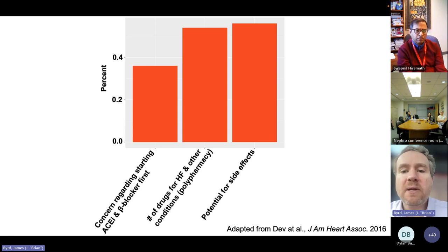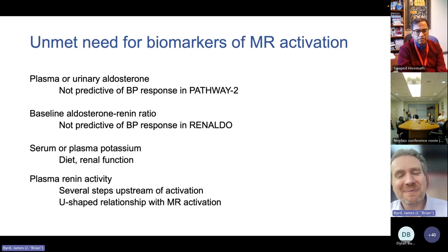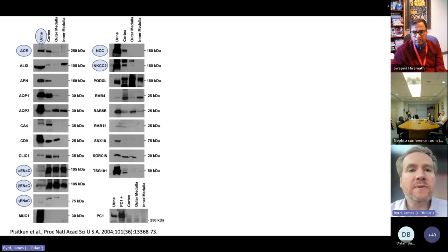There was a mixed-method study done by Dev and colleagues asking, why do you think clinicians don't prescribe mineralocorticoid receptor antagonists? The most common answer was the potential for side effects. People fear hyperkalemia. We concluded there's an unmet need for biomarkers of mineralocorticoid receptor activation. Plasma or urinary aldosterone are not very predictive of blood pressure response. Baseline aldosterone and renin ratio is sort of weakly predictive. Serum or plasma potassium are confounded by diet and renal function. Plasma renin activity seems to work reasonably well as an inverse marker of mineralocorticoid receptor activation but must clearly have a U-shaped relationship.